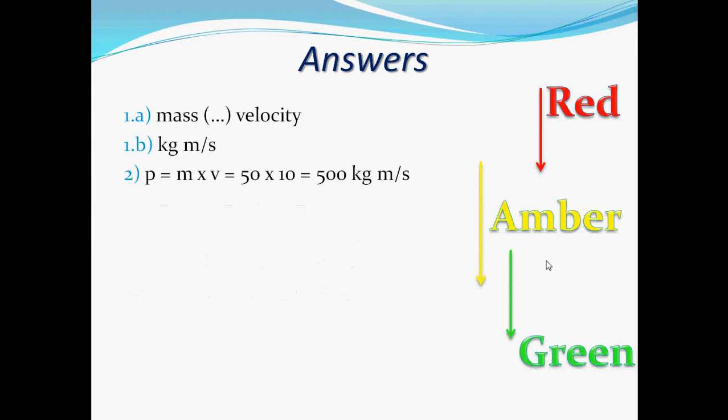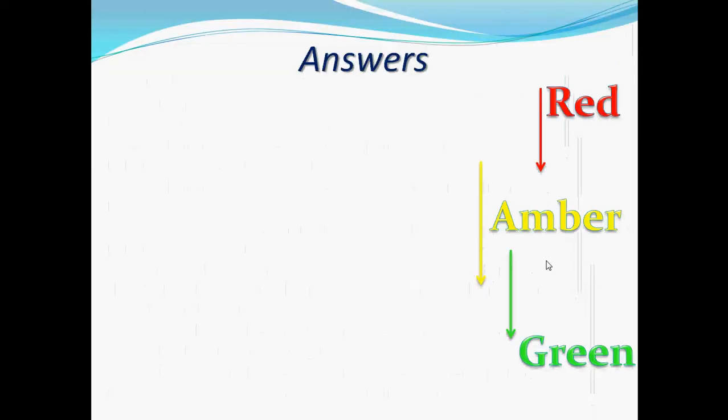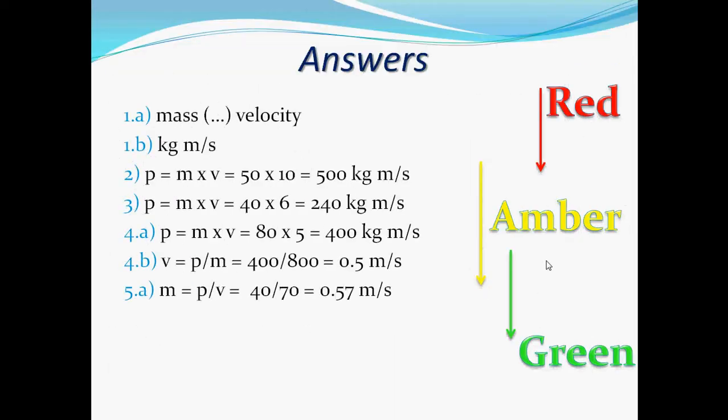And finally, the very last question. A second object has the same momentum but a mass of 4,000 grams. What is the velocity in SI units? Because it's in SI units, that means that I want in meters per second. That means that I need to get those 4,000 grams into kilograms. So getting 4,000 grams into kilograms, that's going to be 4 kilograms. And then to get the velocity, I do momentum over mass, so 40 over 4, and that gives me 10 meters per second.